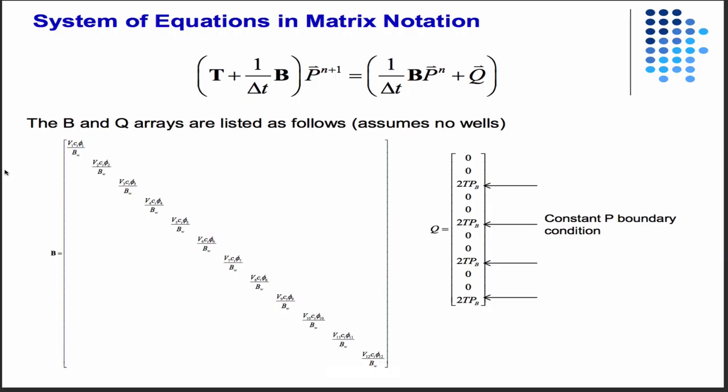And of course, then the Qs also accounted for the constant pressure boundary condition. You have, in this case, there was no wells, but you had a constant pressure on the right. So you have this 2TB that shows up over there on the far right-hand side.